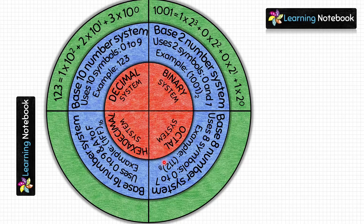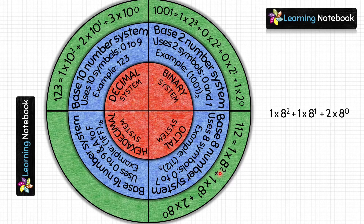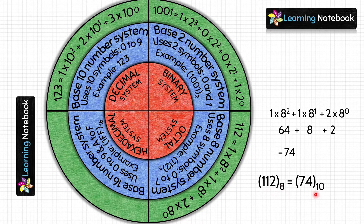For the octal number 112, the expanded form is: 1 × 8² + 1 × 8¹ + 2 × 8⁰. We use 8 because it is a base-8 number system. Solving: 8² = 64, so 64 × 1 = 64; 8¹ = 8, so 8 × 1 = 8; 8⁰ = 1, so 1 × 2 = 2. Adding these gives 74, meaning 112 in octal equals 74 in the decimal number system.